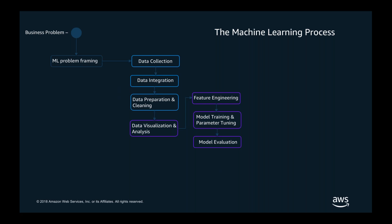At the end, you evaluate whether the model succeeded at achieving your business problem. If not, you're augmenting data — identifying additional data sources, determining if there's missing data that needs to be collected, or potentially doing feature augmentation. Feature augmentation techniques can be applied to synthesize or add additional features to help guide a better outcome for your model evaluation.